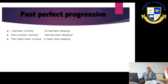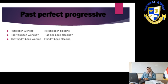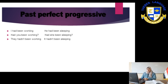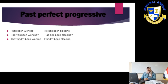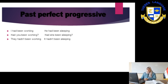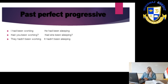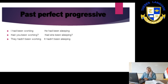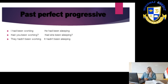For the question form: had + subject + been + verb + ing. For example: Had you been working? Had she been sleeping? For the negative, we only put 'not' beside 'had.' So: They hadn't been working. It hadn't been sleeping.